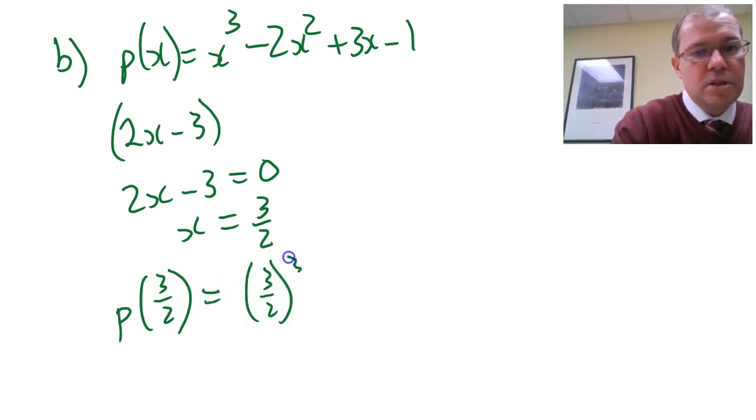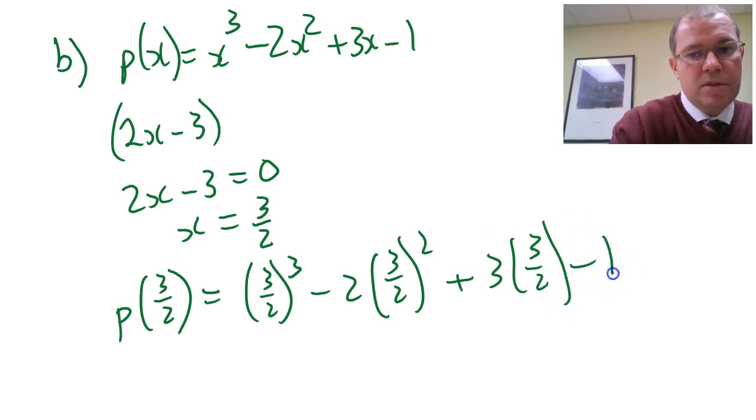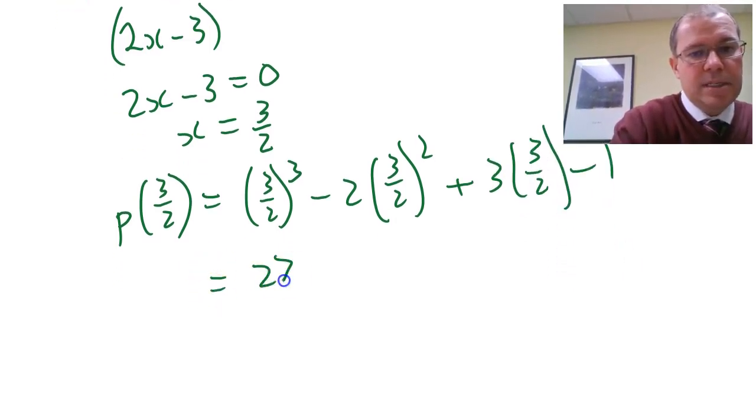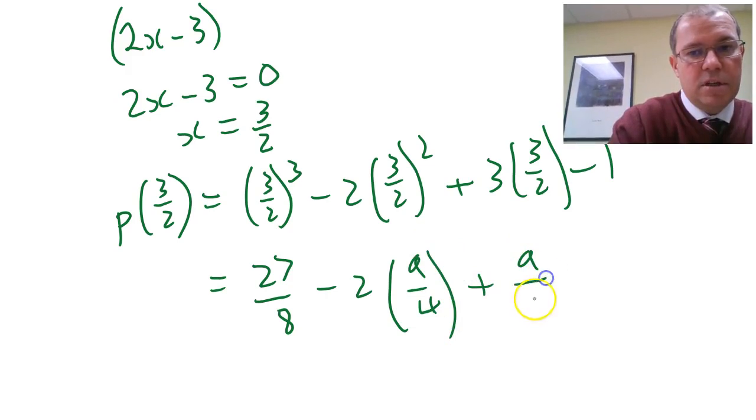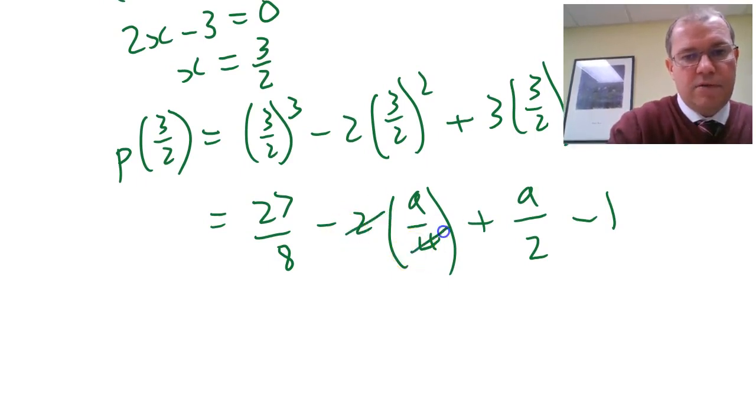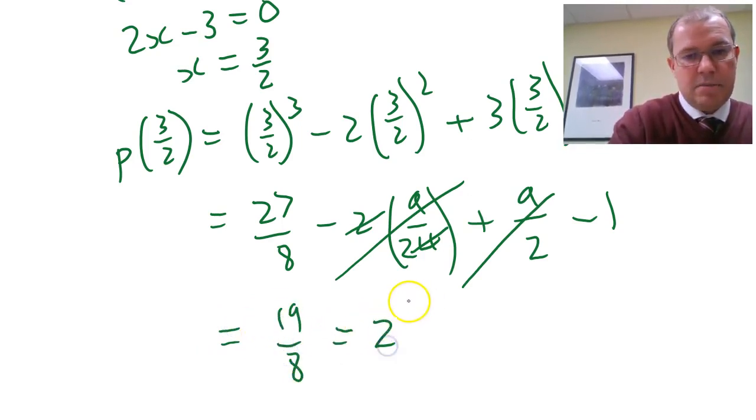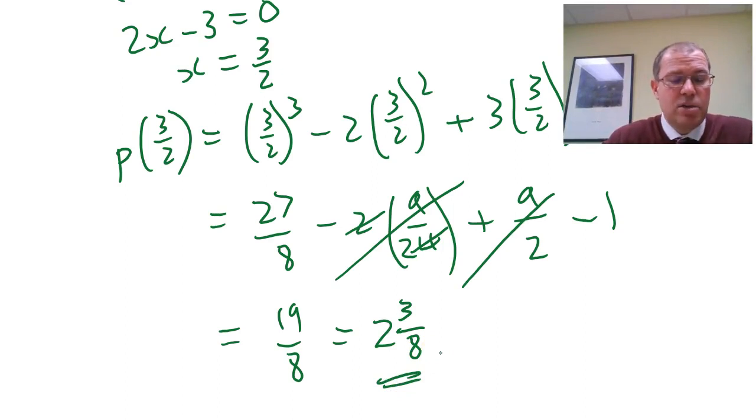So we find P(3/2), so it would be (3/2)³, minus 2 times (3/2)², plus 3 times 3/2, minus 1. And quickly working that out, that's 27/8, minus 2 times 9/4, plus 9/2, minus 1. Well, something nice happens here, obviously the 2 over 4 cancel there, give me a 9/2. The minus 9/2 and plus 9/2 cancel, and I'm left with 27/8 minus 1, which is clearly 19/8. Or if you want to write it as a mixed fraction, 2 and 3 eighths. So we've very quickly found the remainder when P(x) is divided by 2x-3 without having to do long division by using the remainder theorem.